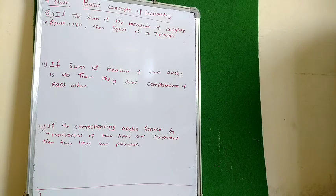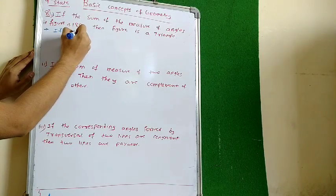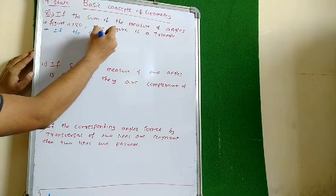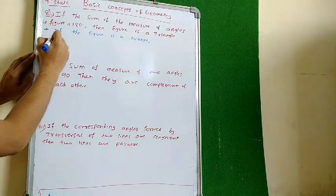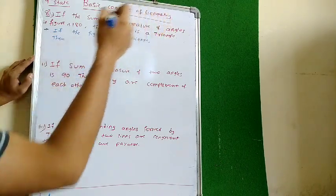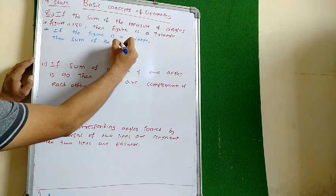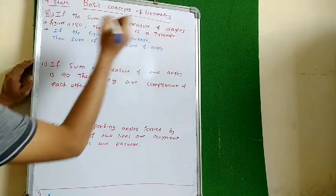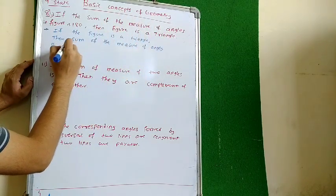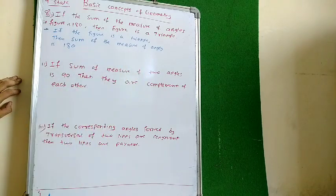So the answer will be: if the figure is a triangle, then the sum of the measure of angles is 180.